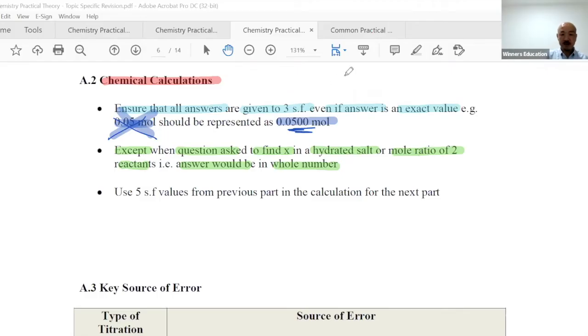Use five significant figures from the previous part in the calculation for the next part for accuracy. You can answer with three significant figures, but go to five significant figures internally. The error is minimized by having two more significant figures.